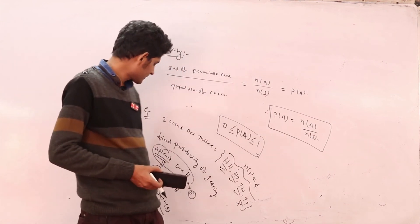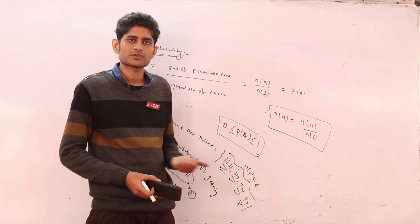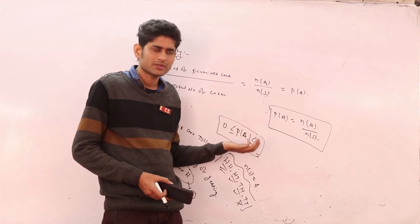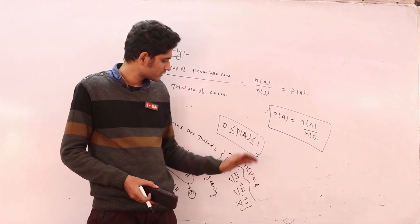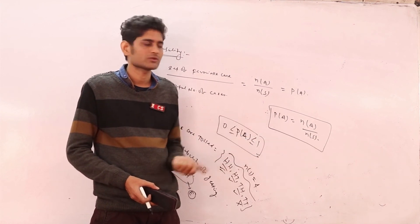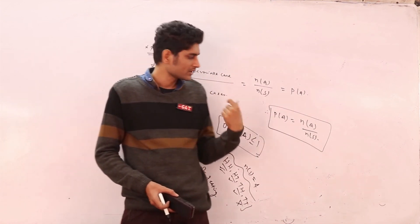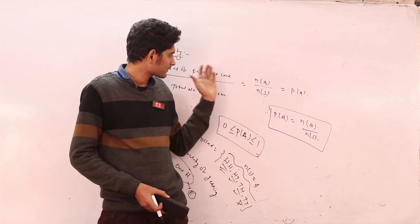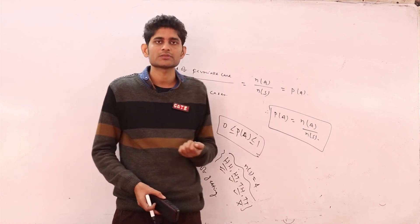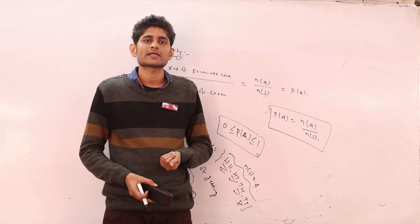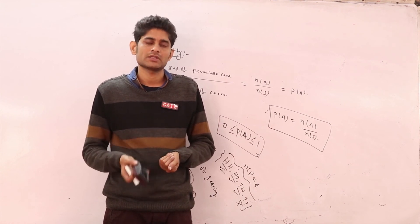In probability, there is no fixed formula like in permutation and combination — it is completely logic based. If you understand the theory and come to the questions, it will be more conceptual and easier for you. In the next part, we will discuss types of events: mutually exclusive events, independent events, equally likely events, and exhaustive events.